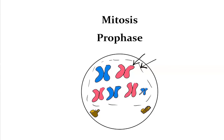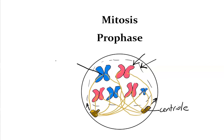Also during prophase, a spindle apparatus forms and starts moving towards the poles of the cell. The spindle apparatus is made up of two parts: centrioles (organelles here) and microtubules that branch off from them. These microtubules grow outward from the centriole and connect to each sister chromatid at something called a kinetochore — another protein complex of the centromere. The centromere holds the two sister chromatids together, while the kinetochore connects to the microtubules coming from the centrioles.